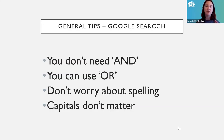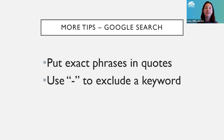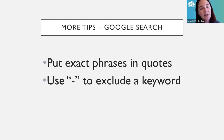Start small, then refine. Here are some ways to refine. If you want an exact phrase, put that phrase in quotes. That tells Google: I want these words in this order and not in any other order.